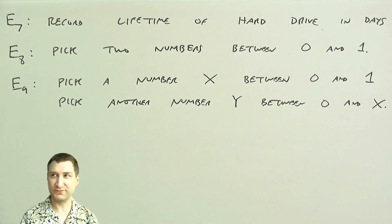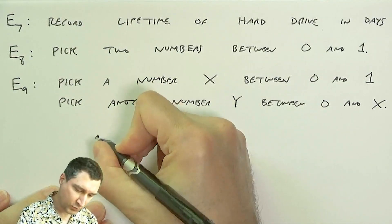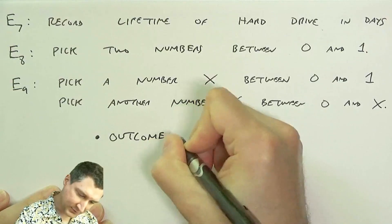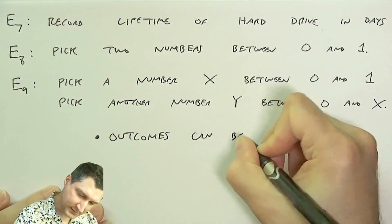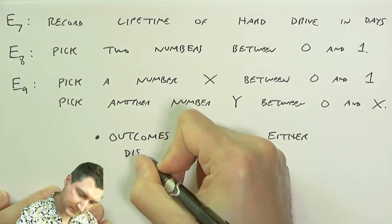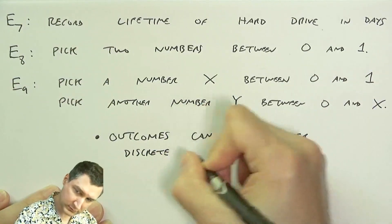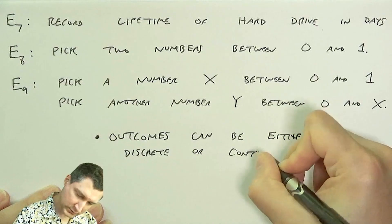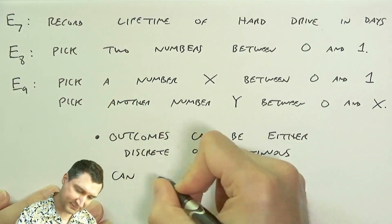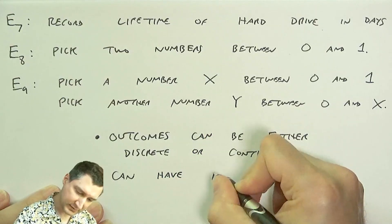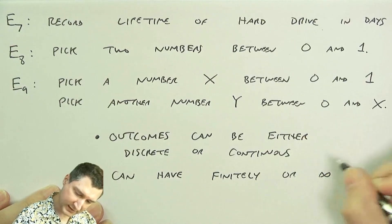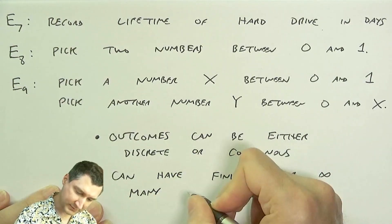So things that we learned from these examples, right? We learned that outcomes can be either discrete or continuous. And we also learned that we can have finitely many or infinitely many outcomes.